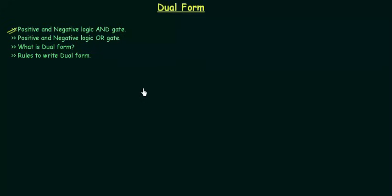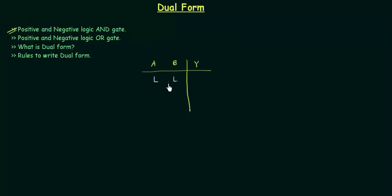I will take a two-input AND gate — A and B are the two inputs and the output is Y. In case of AND operator, the output will be high when both inputs are high, and if any input is low the output is low. We have four possible combinations: low-low, low-high, high-low, and high-high, giving outputs of low, low, low, and high.